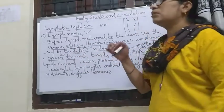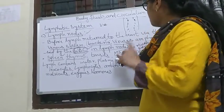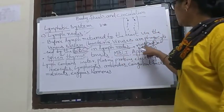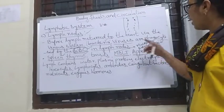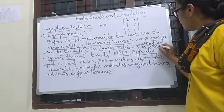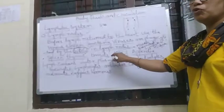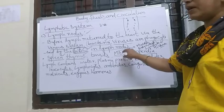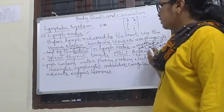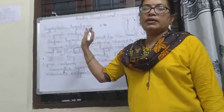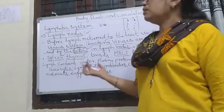Next, tonsils — these are present in the throat region. Next, MALT — what is MALT? That is mucosa associated lymphatic tissue. And appendix — the appendix is also one of the organs which helps in the formation of lymphocytes.